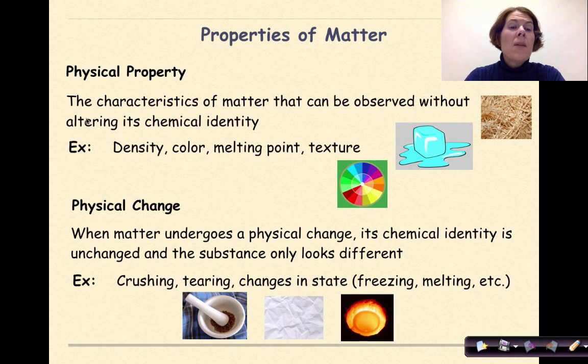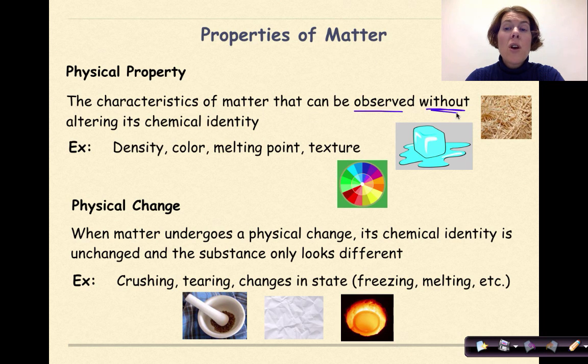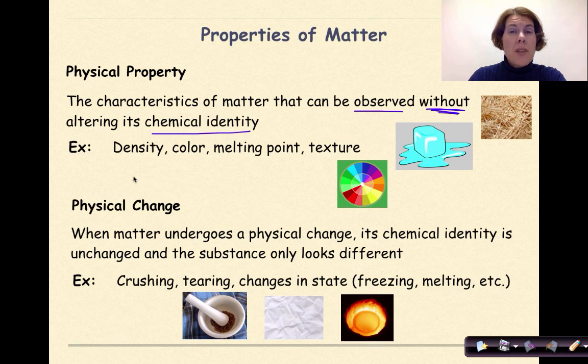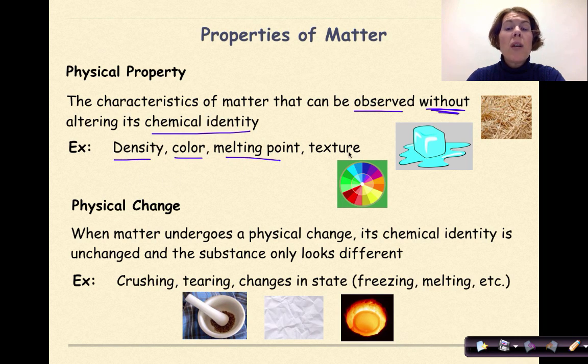A physical property is the characteristics of matter that can be observed without altering its chemical identity. So examples of physical properties are things like density, color, melting point, and texture.